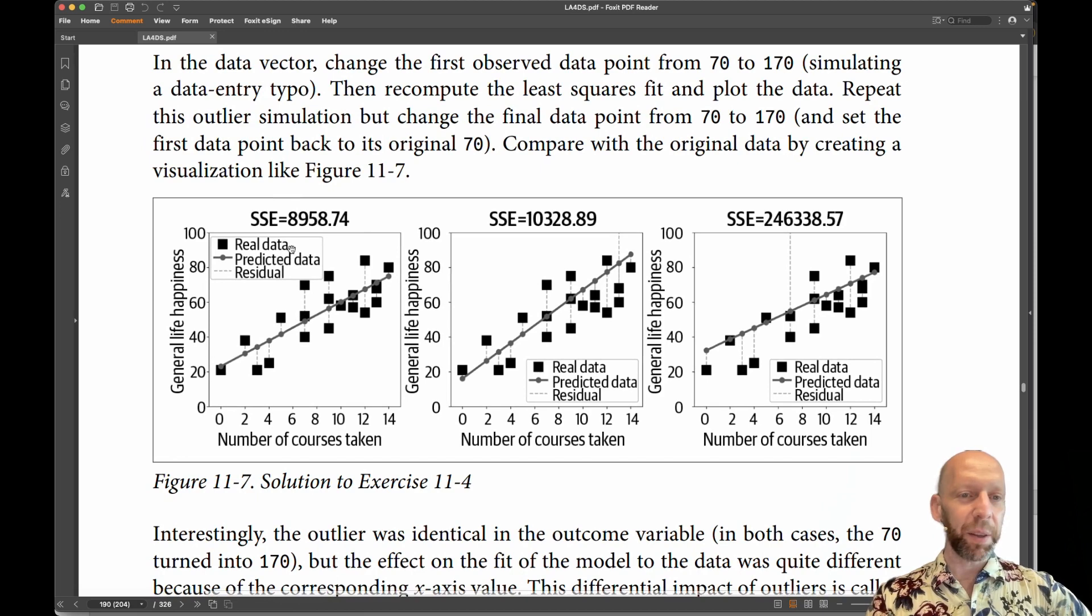Here's the real data, you can see the sum of squared errors is 90,000 approximately. When the outlier was over here, then the sum of squared errors was 10,000. So worse fit of the model to the data. But not that much worse, maybe relative to this.